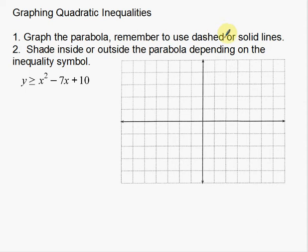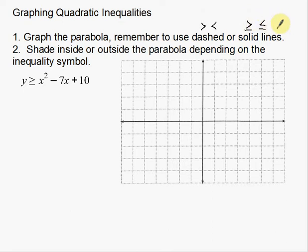First thing: graph the parabola. Remember to use either a dashed line or a solid line. When you graph inequalities, you're graphing a boundary — the shaded area tells you where all your solutions are. I have answers on this side and no answers on that side. Dashed lines are when we have greater than or less than symbols. Solid lines are when we have greater than or equal to, or less than or equal to. If you have a solid line underneath the symbol, it's going to be a solid line; if you don't, it's going to be a dashed line.